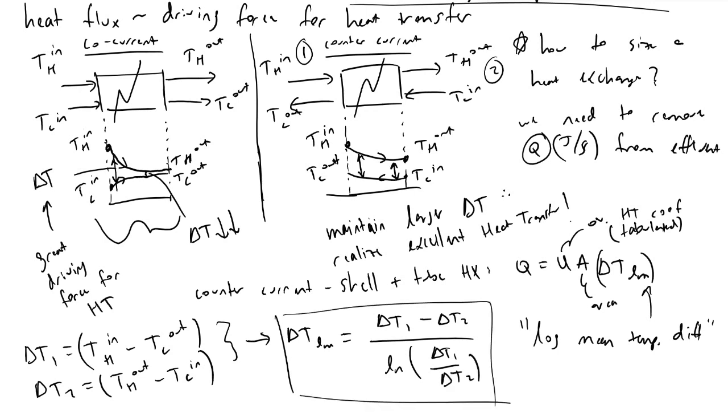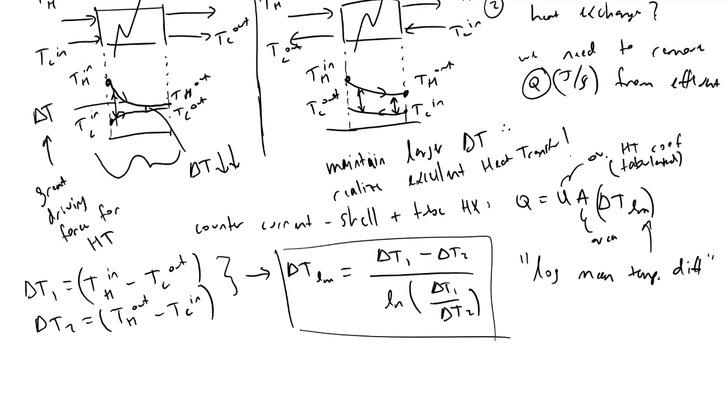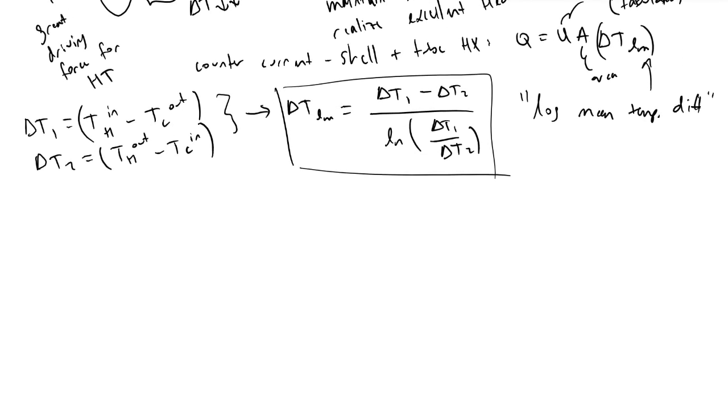So with this defined, what we can do now is: what area is required to exchange Q joules per second of heat between two phases?